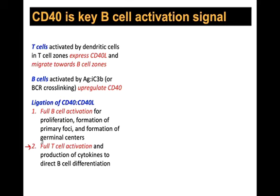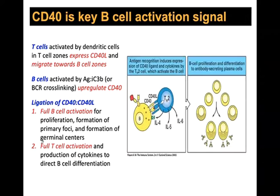Student question: What are T cells called in the intermediate stage between initial activation and full activation after B cell interaction? Answer: They're called a Th0 type — undifferentiated helper cells. It's analogous to B cells: B cells initially activate and then need T cells for full activation; T cells initially activate and then need B cell interaction. There's no specific name for T cells in that transition before getting the B cell signal.